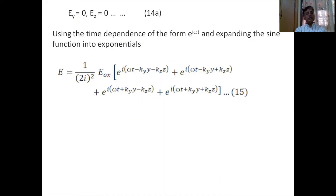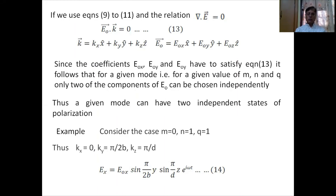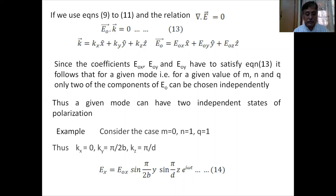This is a standing wave pattern formed by the superposition of plane progressive waves. Expanding the sine and cosine functions using the time-dependent factor e^(iωt), one can identify the individual plane progressive waves whose superposition produces this standing wave pattern.